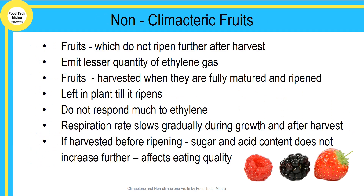Non-climacteric fruits are fruits which do not ripen further after harvest. They give out a lesser quantity of ethylene gas, due to which non-climacteric fruits do not continue to ripen even after harvesting. Almost all fruits produce ethylene, but non-climacteric fruits produce it at much lower levels and do not rely upon it as the main driver of ripening. So these fruits are harvested when they are fully matured and ripened. Respiration rate slows down gradually during growth and after harvest. If harvested before ripening, sugar and acid content does not increase further, which affects the eating quality of the fruits.